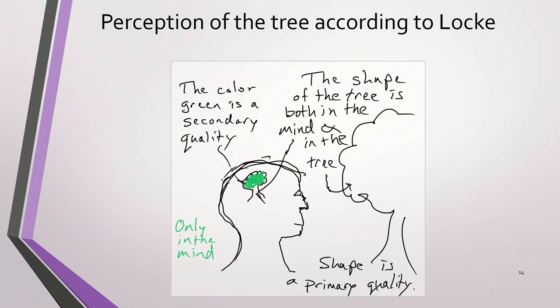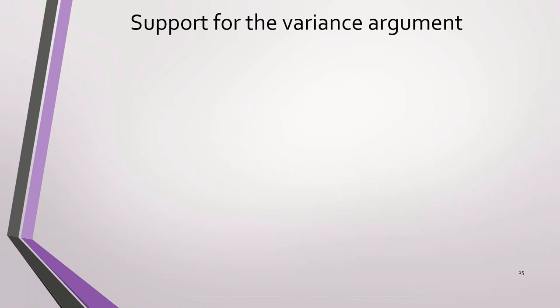Shape is a primary quality. And we can say the same thing about motion and number and size. But the color green that we experience, that's a secondary quality. And it exists only in the mind. It doesn't exist out there in the external world. Why does he think that? Because of the variance argument that we considered in part one. So let's think about this a little bit more. What's the support for the variance argument?